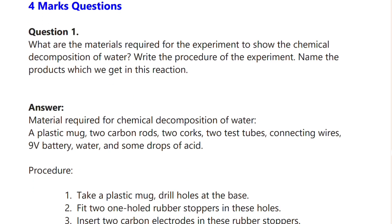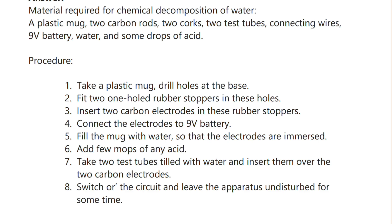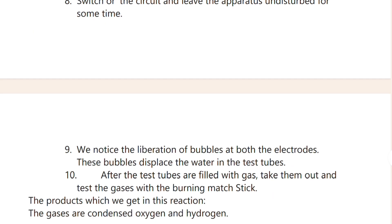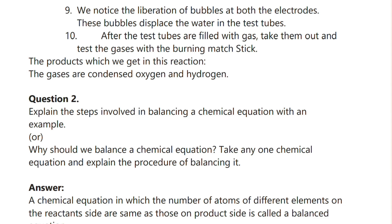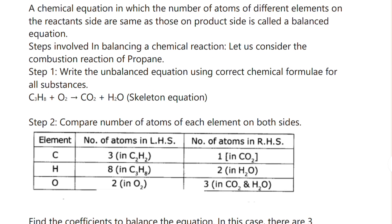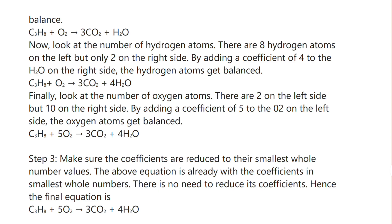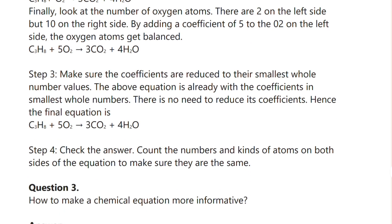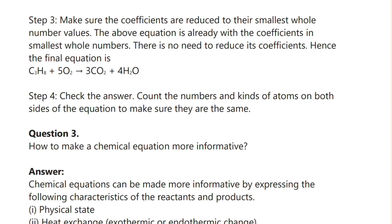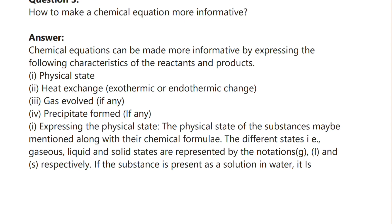Now the four-mark questions start here. The first four-mark question asks: what are the materials required for a chemical decomposition reaction? The answer is given. Question number two asks you to explain the steps involved in balancing a chemical equation with an example, and the answer is provided. These are all the four-mark questions in this chapter.